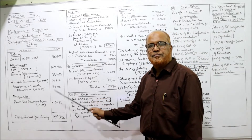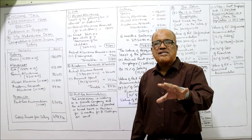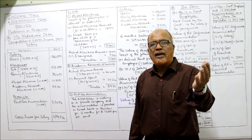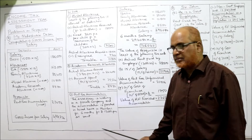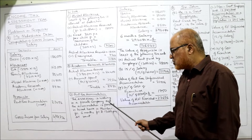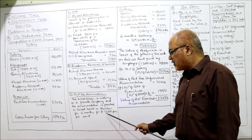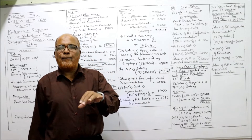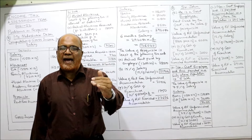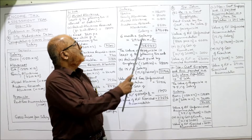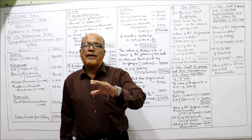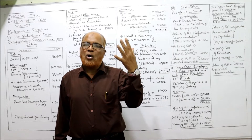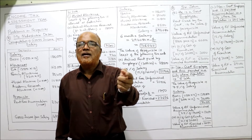Now for rent-free accommodation: the employee is a non-government employee, accommodation given only for six months, and the employer has taken it on hire at 13,000 per month. For hired accommodation, take the least of: actual hire charges or 15% of salary. Salary for RFA means: basic + bonus + fees + commission + all taxable allowances, excluding DA unless it enters for retirement benefit.